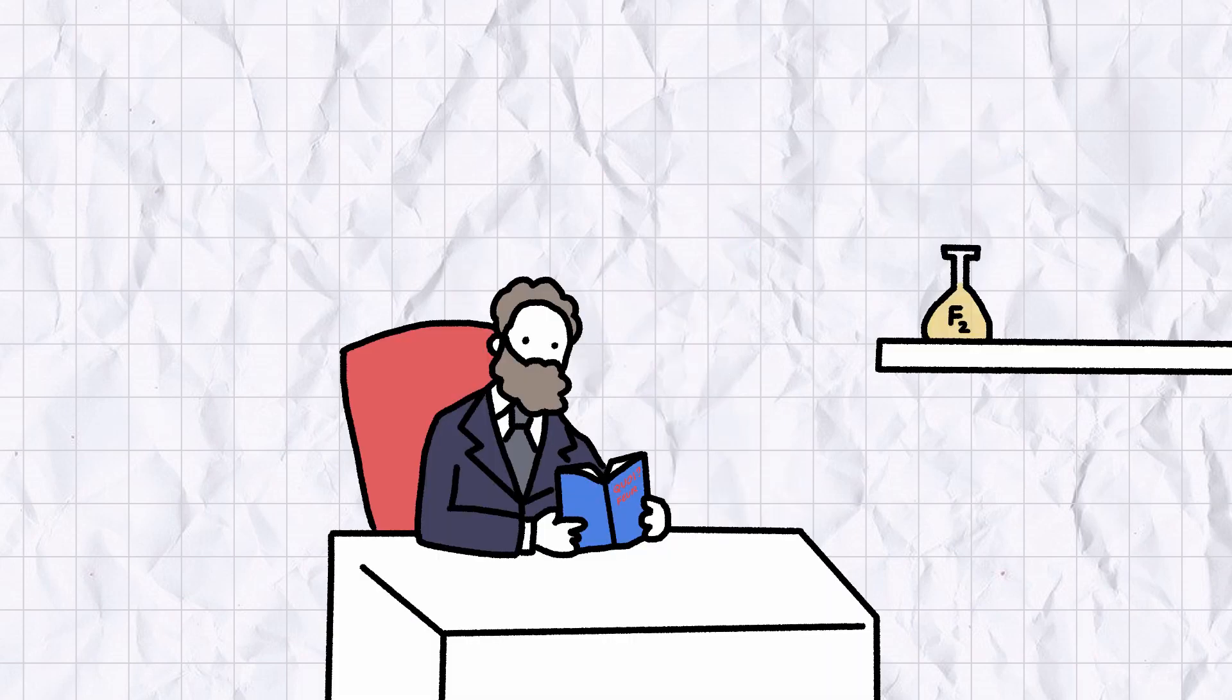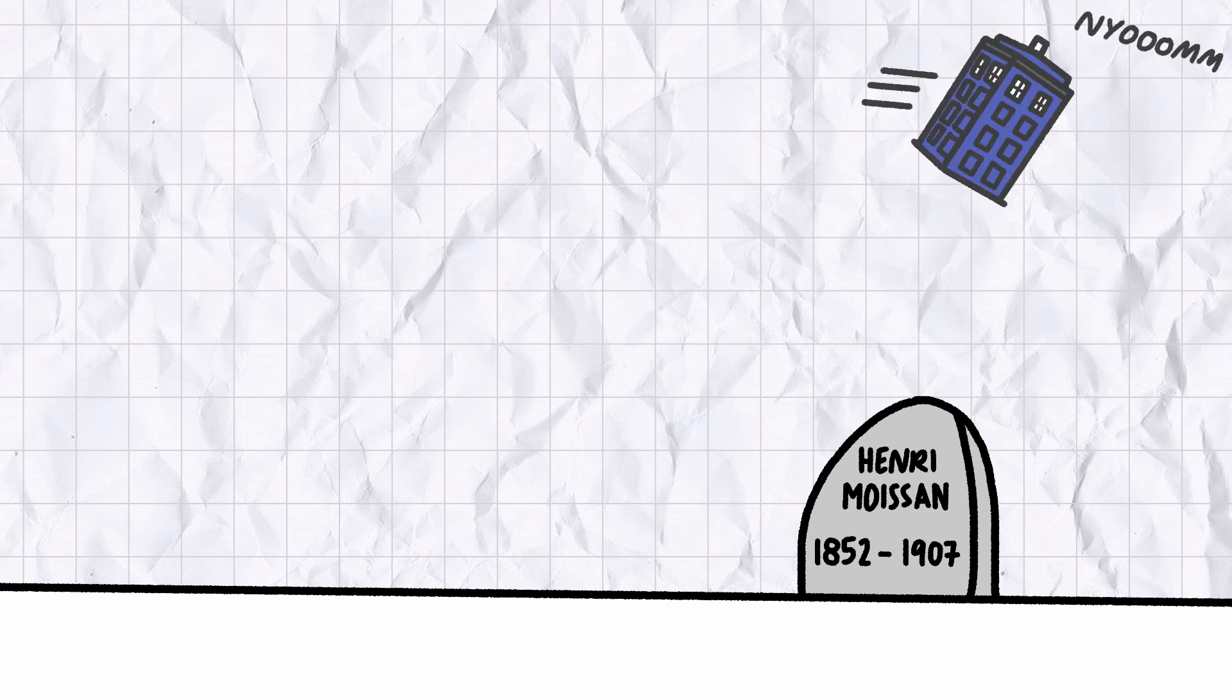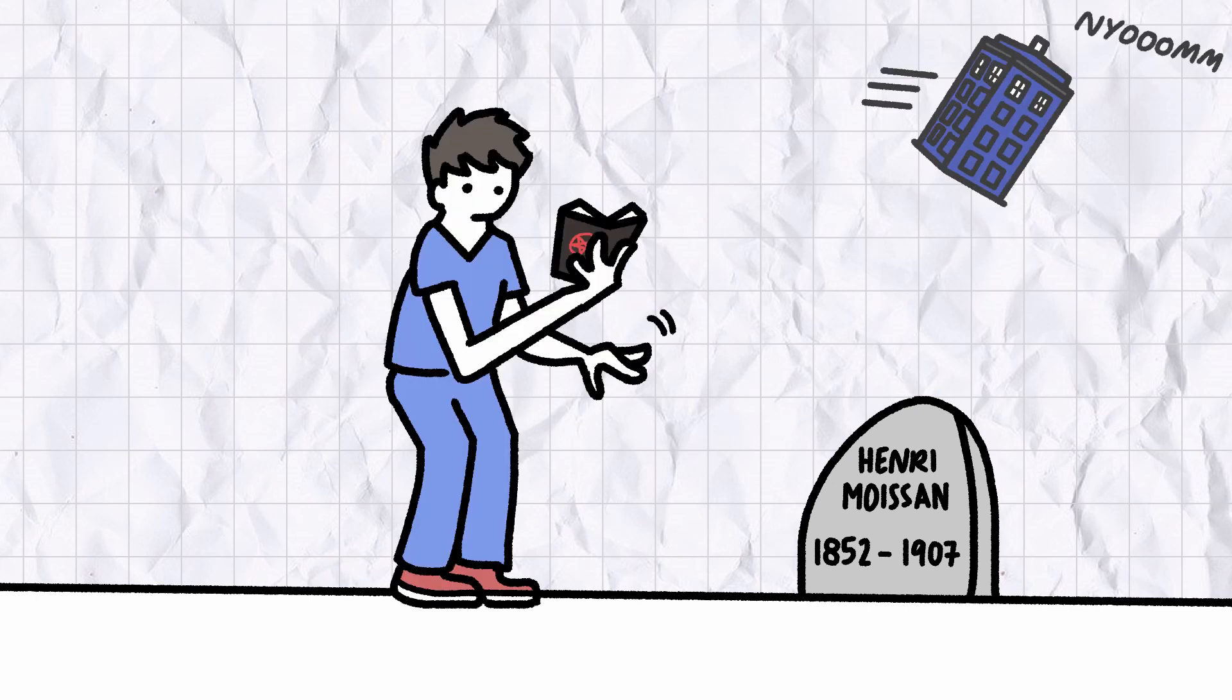But shortly after the award ceremony, Moissan died from an aggressive case of appendicitis, his immune system ravaged by decades' worth of exposure to toxic compounds. Moissan's experiments with fluorine almost certainly prematurely ended his life, but without the help of a time machine or a nursing student with a module or two, a necromancy will never know for sure.